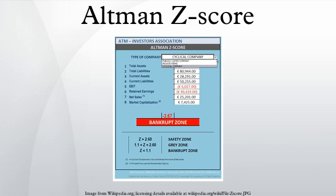Altman's work built upon research by accounting researcher William Beaver and others. In the 1930s and onward, Mervin and others had collected matched samples and assessed that various accounting ratios appeared to be valuable in predicting bankruptcy. Altman's Z-score is a customized version of the discriminant analysis technique of R.A. Fisher. William Beaver's work, published in 1966 and 1968, was the first to apply a statistical method — t-tests — to predict bankruptcy for a pair-matched sample of firms, evaluating the importance of each accounting ratio based on univariate analysis, using each ratio one at a time. Altman's primary improvement was to apply discriminant analysis, which could take into account multiple variables simultaneously.